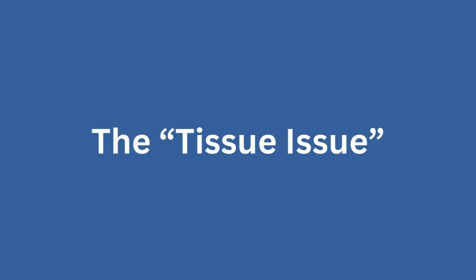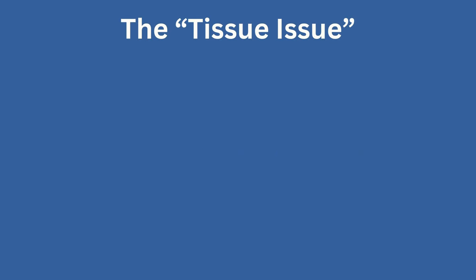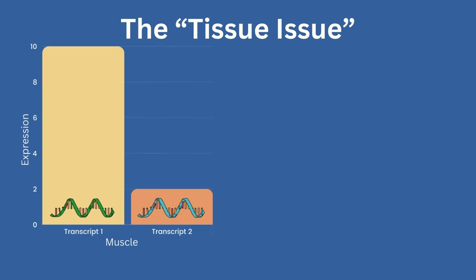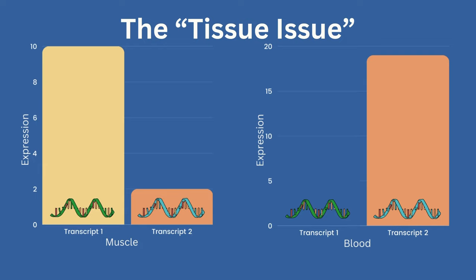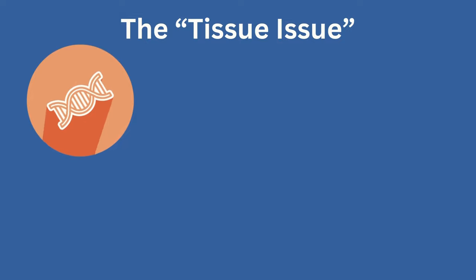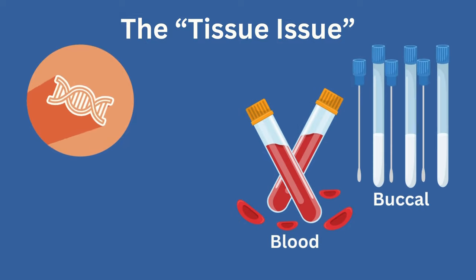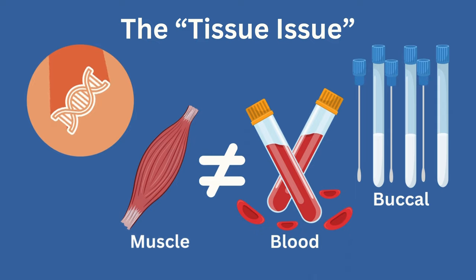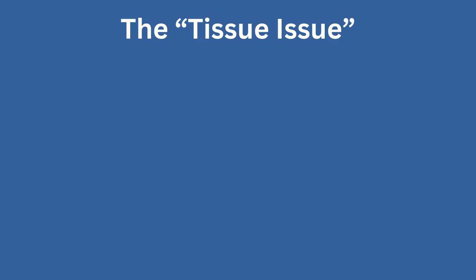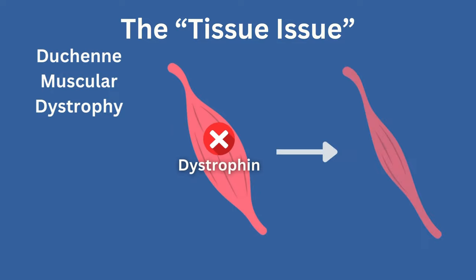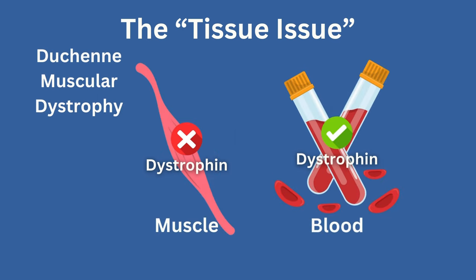Next is the tissue issue. RNA transcripts are often expressed in tissue- or cell-specific manners — that is, different versions or levels of RNAs may be expressed in different tissues. This is a significant hurdle, as DNA sequencing can be done with minimally invasive blood or buccal samples. However, RNA sequencing data produced from these samples may not be transferable to the tissues being affected by a genetic disorder. For example, in Duchenne muscular dystrophy, skeletal muscle tissue is affected by the loss of the protein dystrophin, leading to degeneration. A typical blood sample may not reflect this loss of dystrophin expression, like a muscle biopsy sample would.